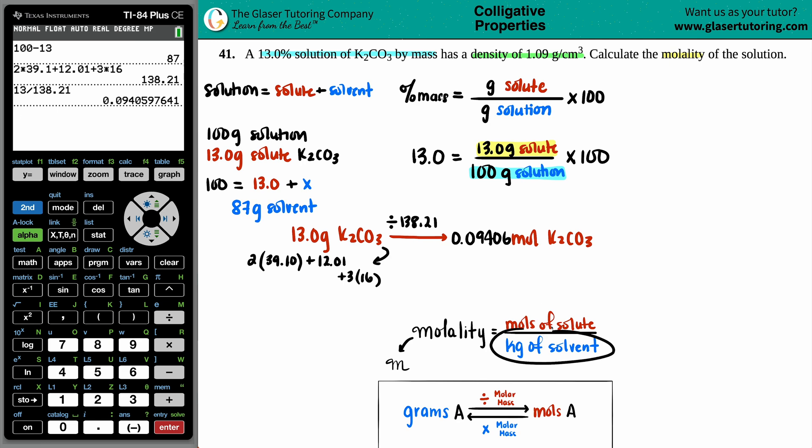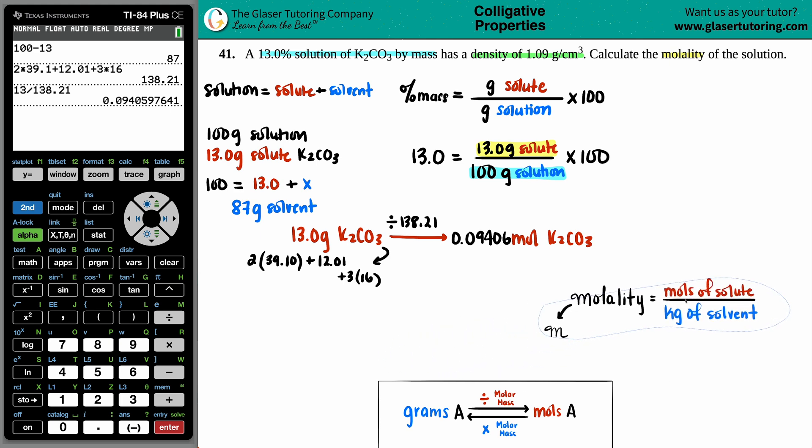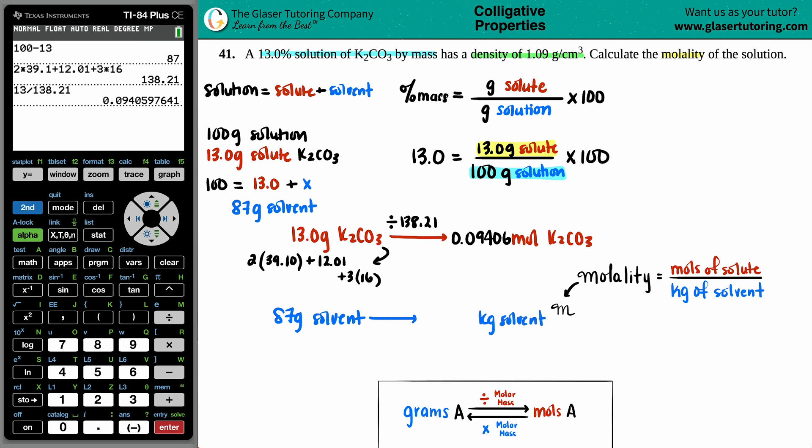Now I need the kilograms of the solvent. We just found out that we had 87 grams of the solvent. We need the kilograms. So I can just go from grams to kilograms. Grams to kilograms is always just dividing by 1,000. Similarly, you could take the decimal, move it over to the left three times. So this would be 0.087 kilograms of the solvent.